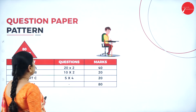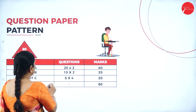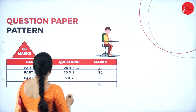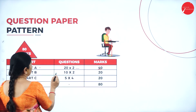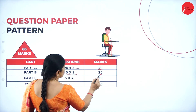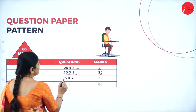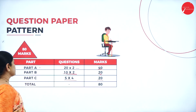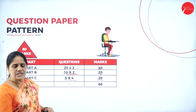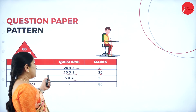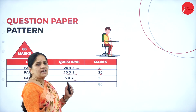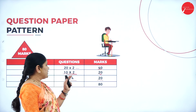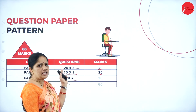Let us look into the question paper pattern. In part A, it will be 20 marks each, coming up to 40. In part B, it will be 10 marks, 2 questions for 20 marks. Part C, 5 marks, 4 questions for 20 marks. Under each heading, we will be having 2 questions of 10 marks each, comprising 20 marks.